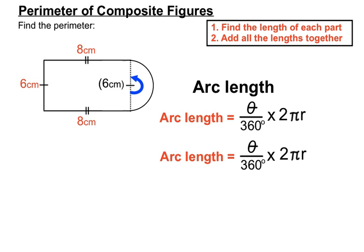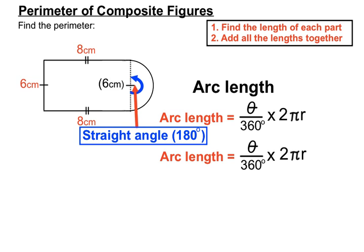Let's fill in the details. The angle marked in blue is a straight angle, and a straight angle is 180 degrees. There are 180 degrees making up the arc that goes around the half circle. So that 180 degrees — the angle size — goes in where the theta is. Theta is an angle-type symbol, so we put 180 degrees over 360 degrees into our formula.